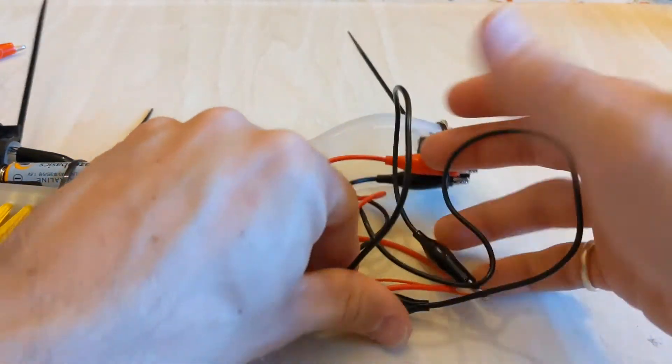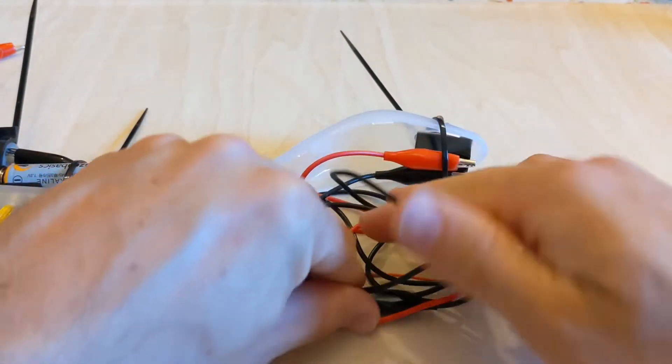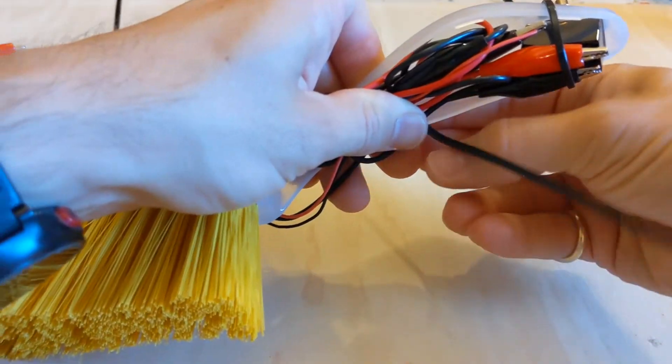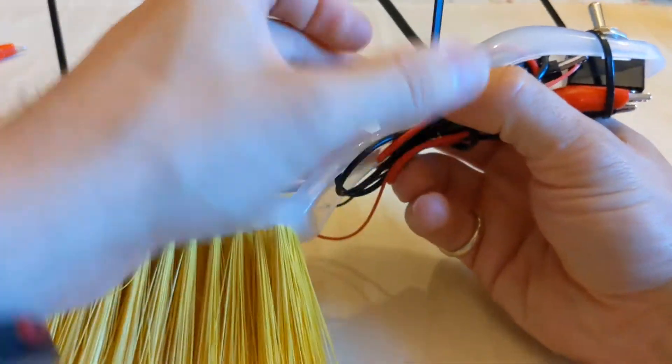Tidy up all the wires together, bundling them up, and tuck them underneath the handle of the brush. Use the final cable tie to secure those in place.